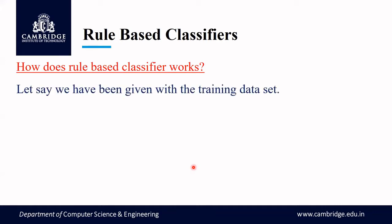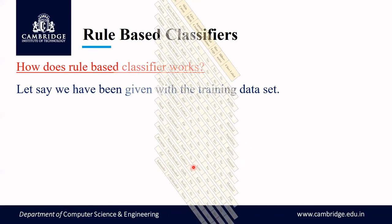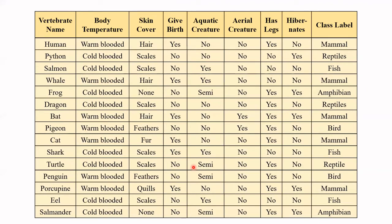Consider this training dataset, which represents the classification of a particular vertebrate — as a mammal, reptile, fish, amphibian, or bird. There are five different class labels. Based on various features such as body temperature, skin cover, whether it gives birth, whether it is aquatic or aerial, whether it can fly, whether it has legs, and whether it can hibernate — the classification is made.